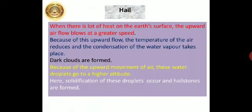The next form of precipitation is hail. When there is a lot of heat on the earth's surface, the upward air blows at a greater speed. Because of this upward flow, the temperature of the air reduces and the condensation of water vapor takes place. So dark clouds are formed. Because of the upward movement of air, the water droplets go to a higher altitude. Here, solidification of these droplets occur and hail stones are formed.